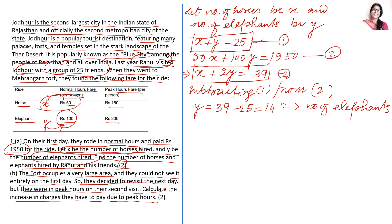X plus Y is equal to 25. You will put in equation 1: X plus 14 is 25. So X is equal to 11, that is number of horses.